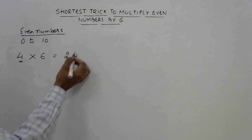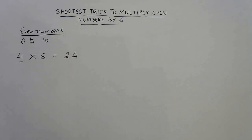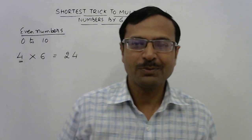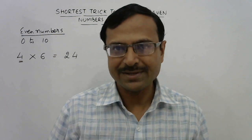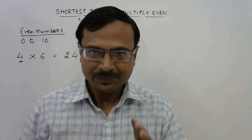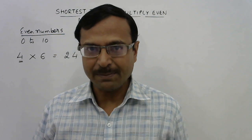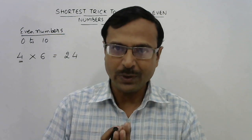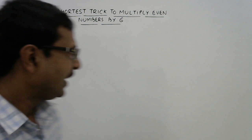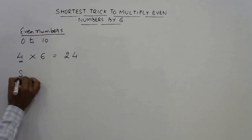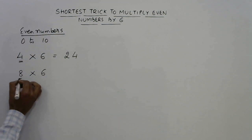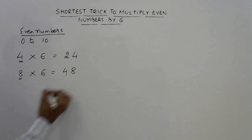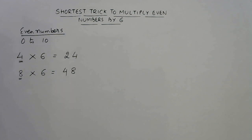So just right here you get your answer. The trick is very simple. Let us take one or two more examples of single digit even numbers, then we will move on to numbers between 10 and 20. Suppose we have 8 into 6. Now what is half of it? It is 4. So 48 is the answer.